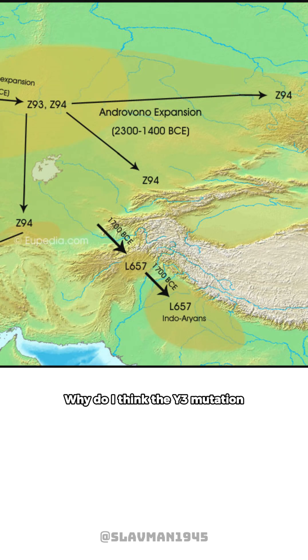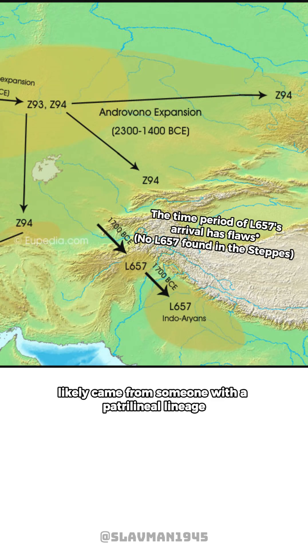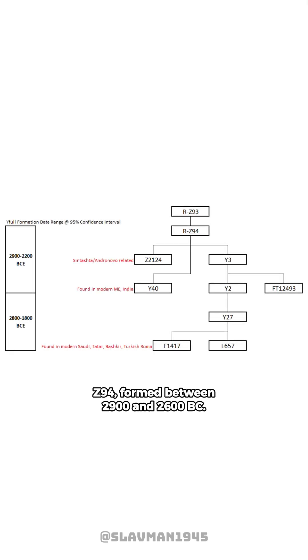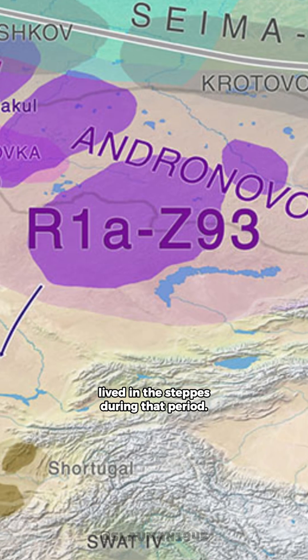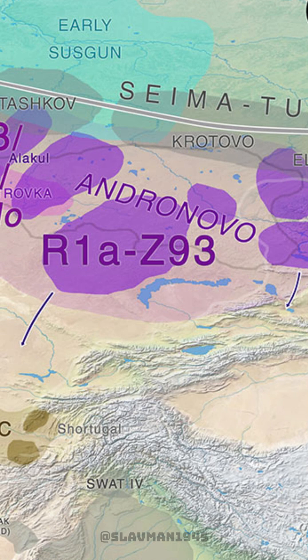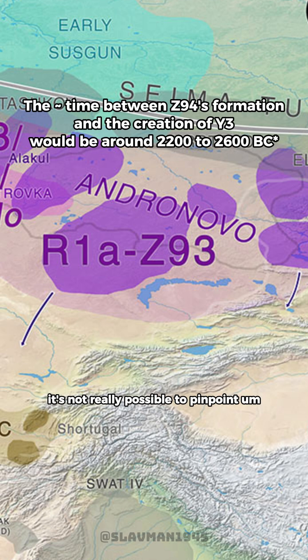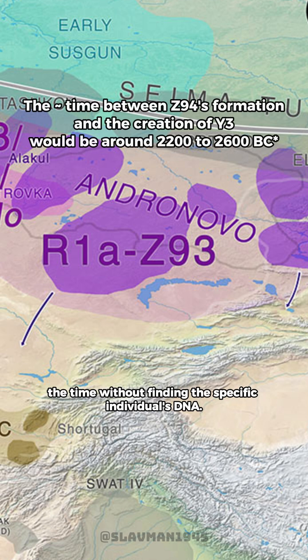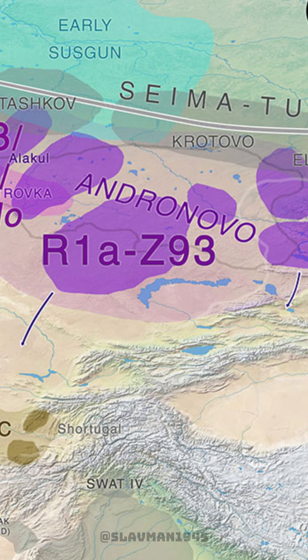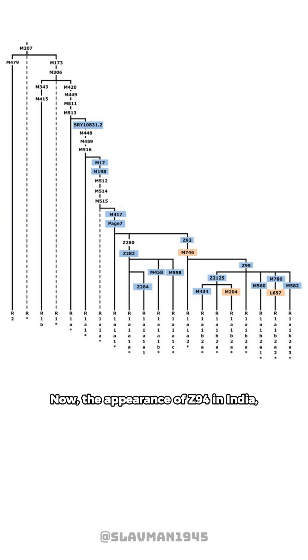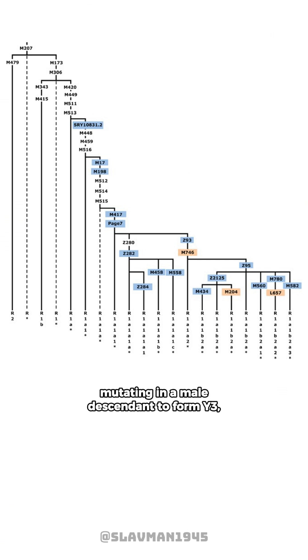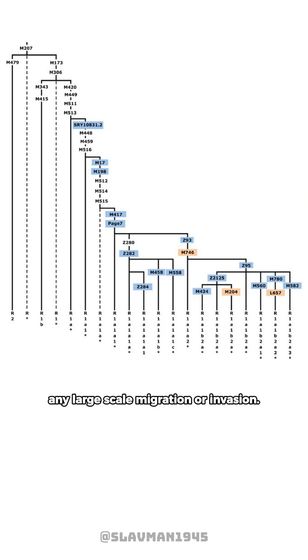Y3's ancestor Z94 formed between 2900 and 2600 BC, meaning the paternal ancestor of the Y3 individual lived in the steppes during that period. However, when exactly this ancestor moved to India — between the formation of Z94 and the creation of Y3 — it's not possible to pinpoint without finding the specific individual's DNA. The appearance of Z94 in India mutating in a male descendant to form Y3 doesn't necessarily prove any large-scale migration or invasion.